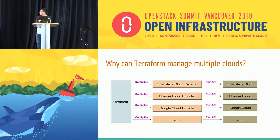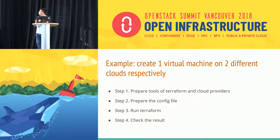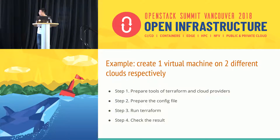Now I will show you an example that will create one virtual machine on two different clouds respectively. There are four steps. First, we will prepare Terraform and the cloud providers. Second, I will prepare the config file. Third, I will run Terraform. And the last, we will check the result.